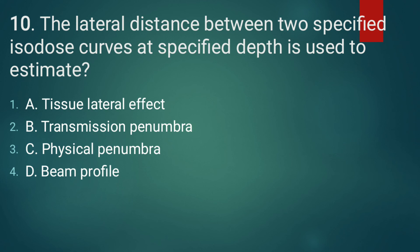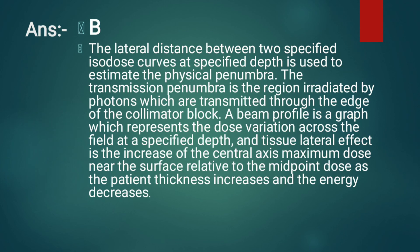Question 10: The lateral distance between two specified isodose curves at a specified depth is used to estimate the physical penumbra. The correct answer is option B, transmission penumbra. The transmission penumbra is the region irradiated by photons transmitted through the edge of the collimator block. A beam profile is a graph representing the dose variation across the field at a specified depth. Tissue lateral effect is the increase of central axis maximum dose near the surface relative to the midpoint dose as patient thickness increases and energy decreases.